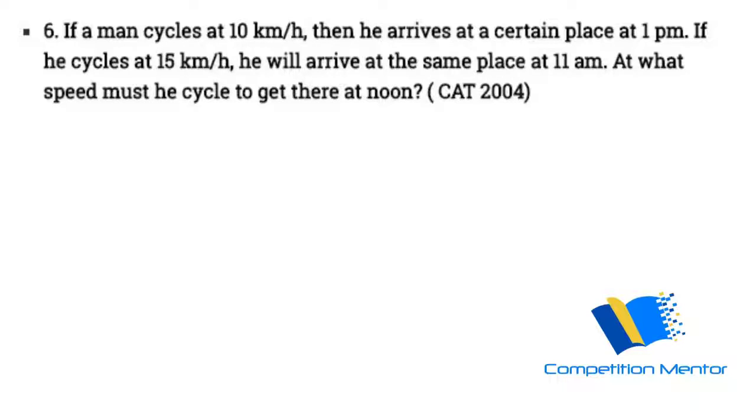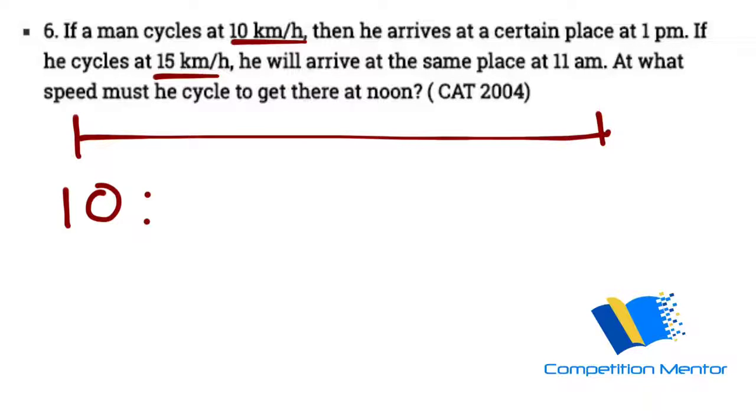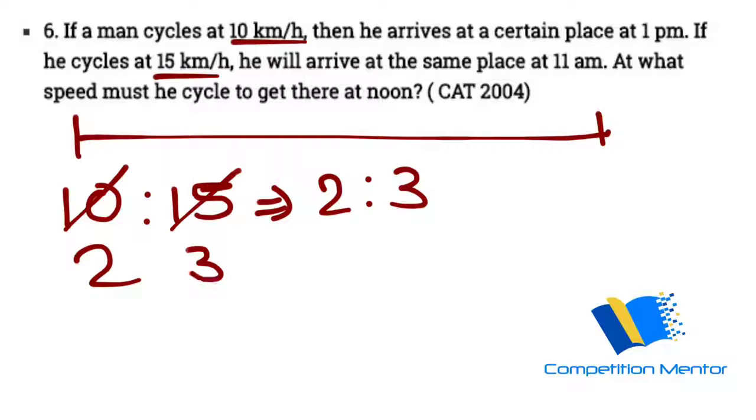So as we know that the distance is constant, it's all about that varying speed that is 10 and 15, and then that change in time. So what is the ratio of speed? That is 10 is to 15, which is 2 is to 3. From here we got the simplified version.